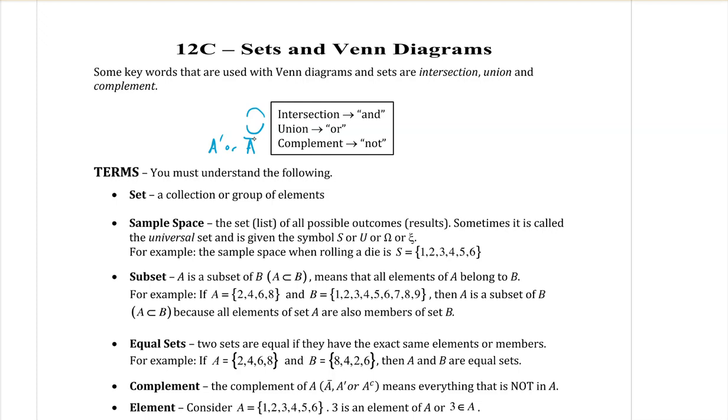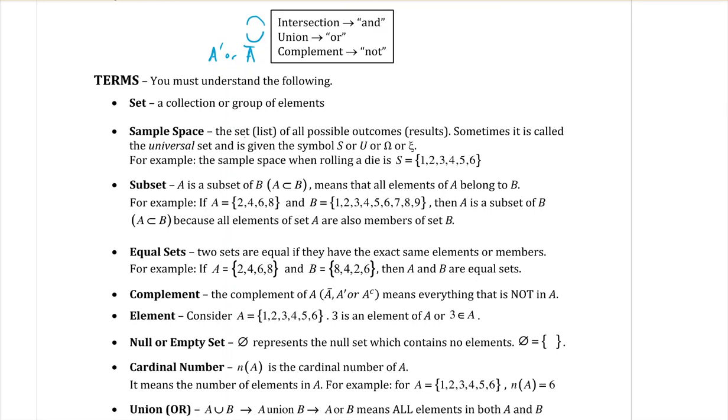Going through a few more terms that we're going to need to use. A set is a collection or group of elements. Sample space, we've talked about this already, is a list of all possible outcomes. It is sometimes called the universal set, which is why there's a few other suggested symbols here. So we're used to using S for sample space, but you may see the letter U because it is the universal set.